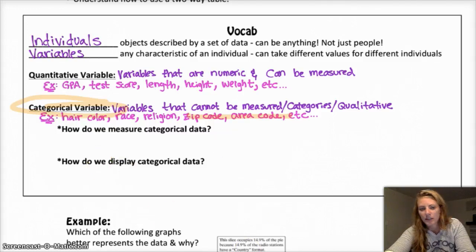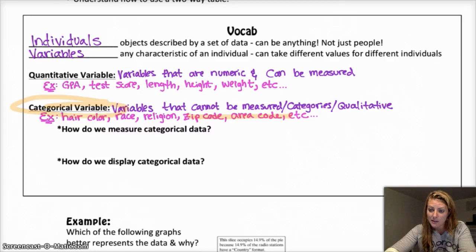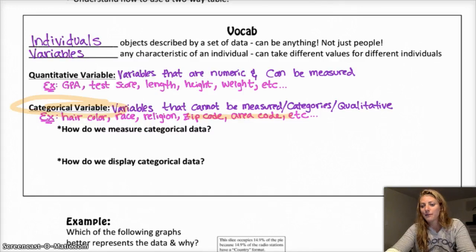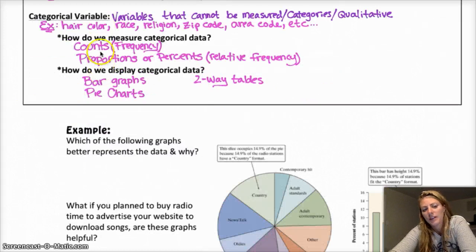So there's a couple different ways to measure categorical data. Sometimes it's in counts. We can measure frequency, which is the same thing as counts. Relative frequency, which is percents and proportions. And then there's also something called cumulative relative frequency. And then, how do we display categorical data? We have bar graphs and pie charts, and there's something called a two-way table, which we're going to talk about as well, all of which are totally fine for categorical data.